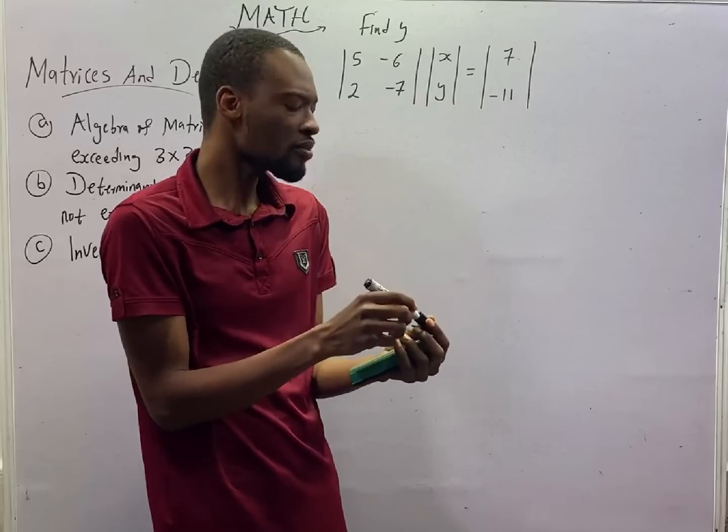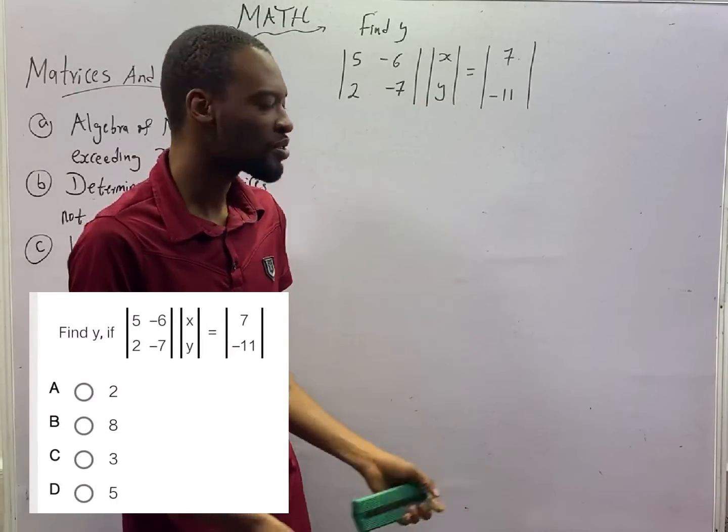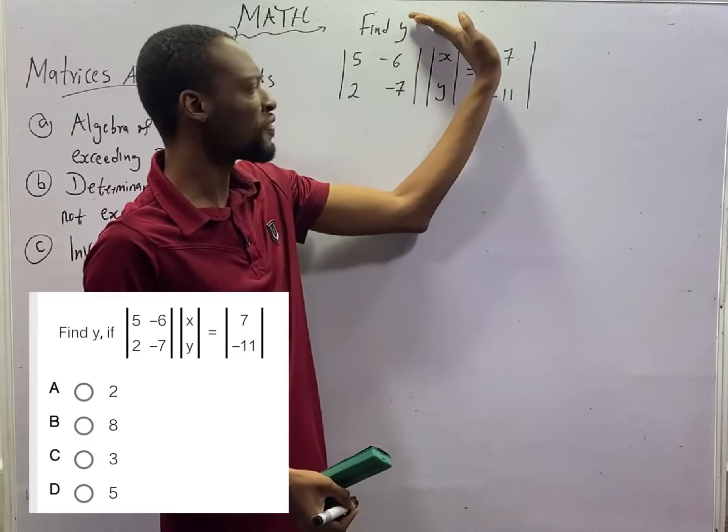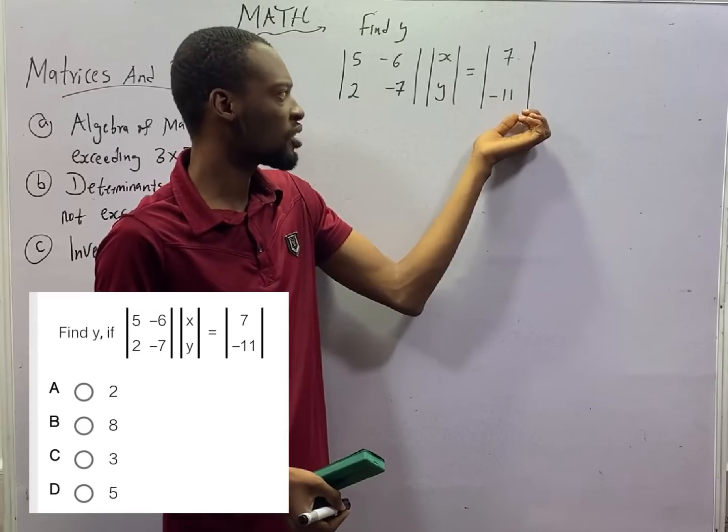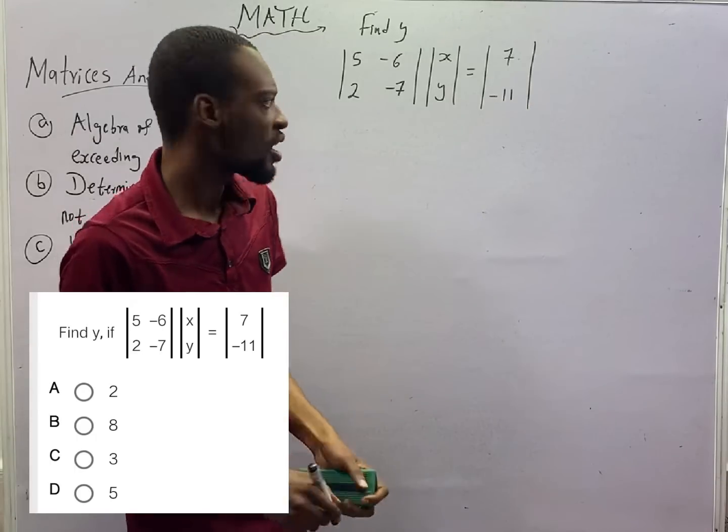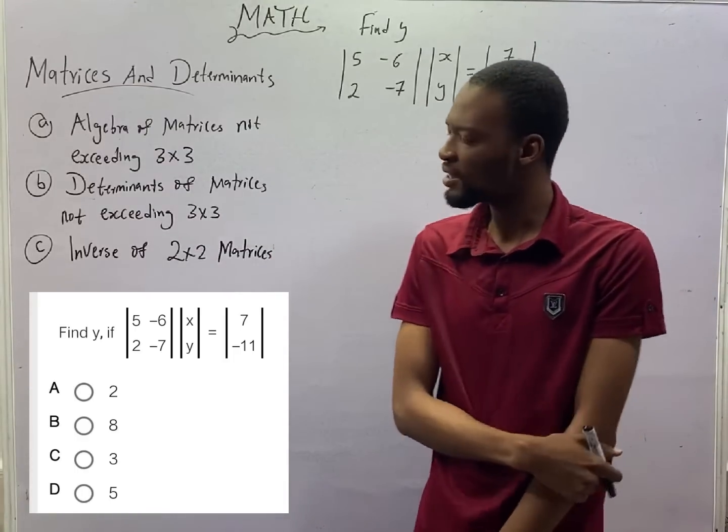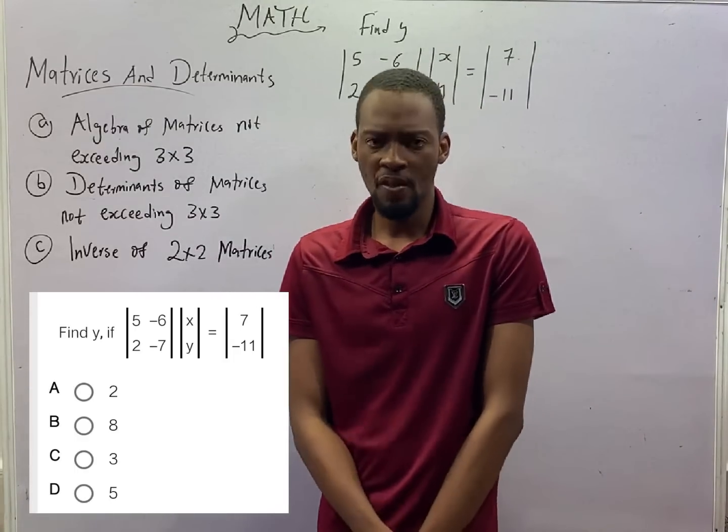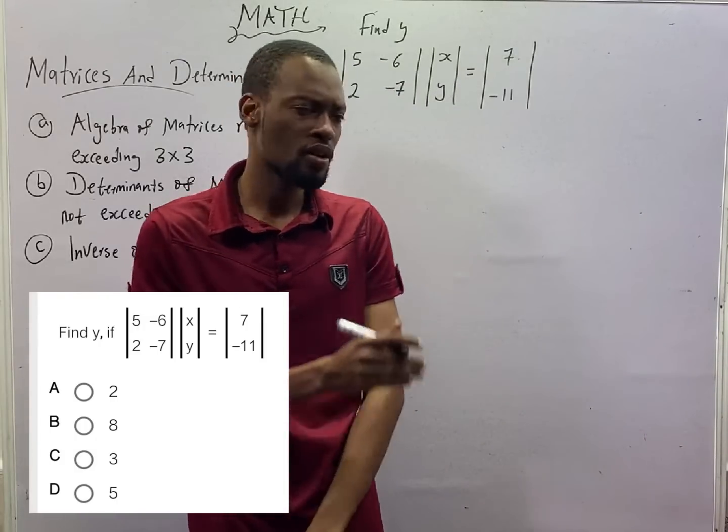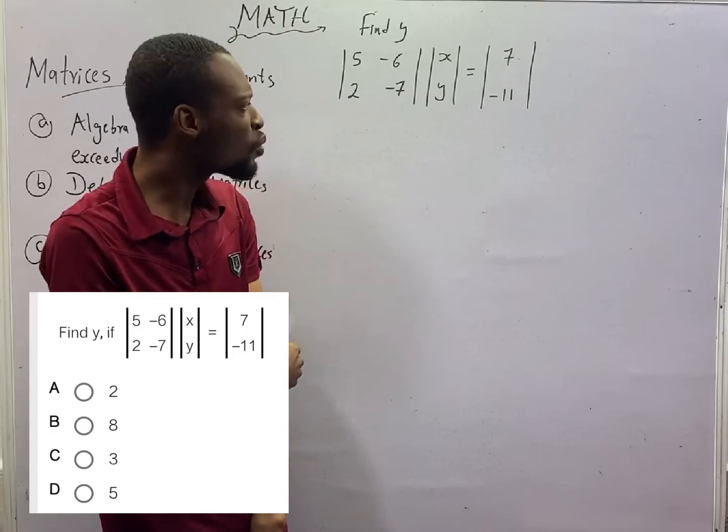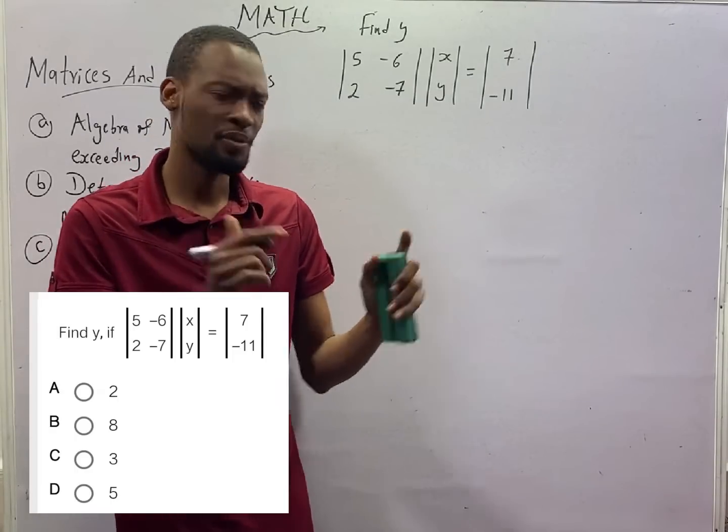Now, look at this other question. This is a type under matrices equations. We are told to find Y and we are given this matrix multiplied by this to be equal to this. And I told you that matrices are said to be equal if their corresponding elements are the same. And I told you, to multiply two matrices, the number of columns of the first matrix should be equal to the number of rows of the second matrix.